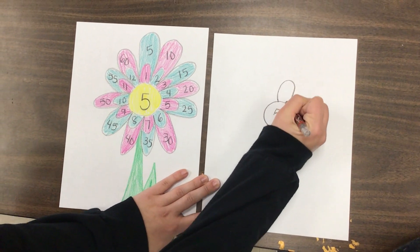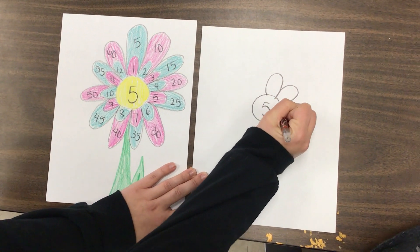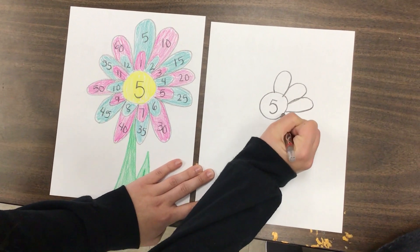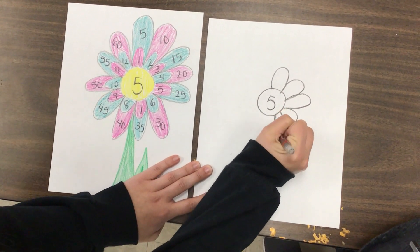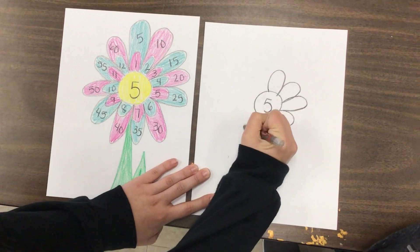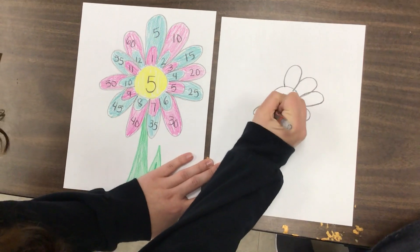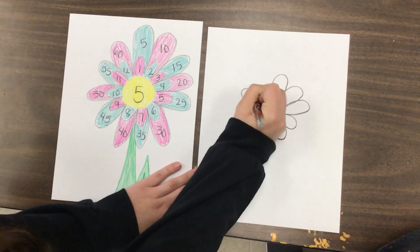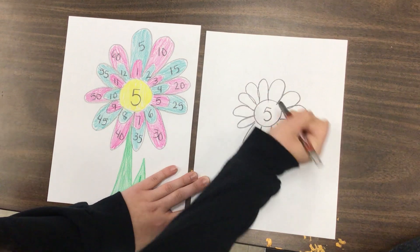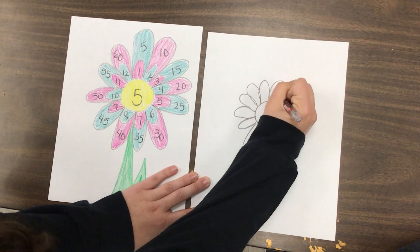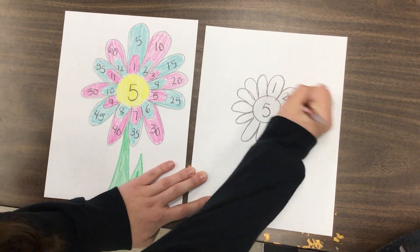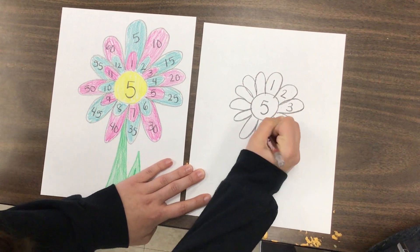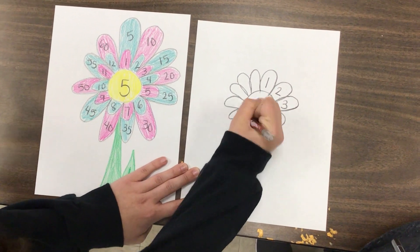So you'd go around one, two, help me count! Three, four, five, six, seven, eight, nine, ten, eleven, twelve! And then you would fill that in by putting one through twelve on the smaller petals.